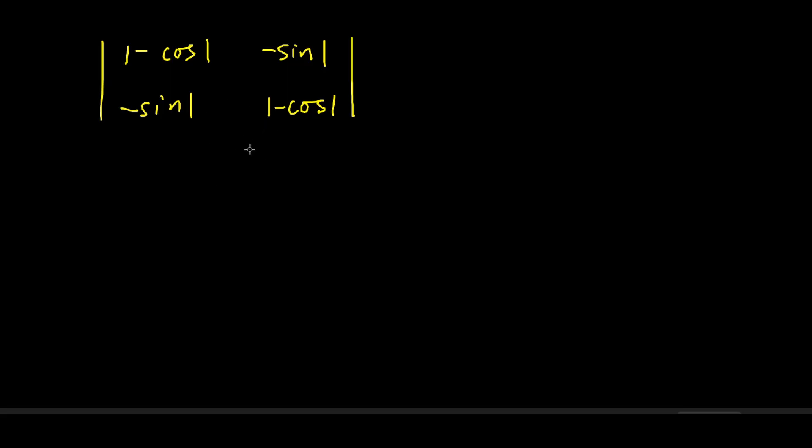This is a determinant. By expanding it, we get 1 minus cosine of 1 squared plus sine squared of 1. Expanding the first term, we get 1 minus 2 times cosine of 1 plus cosine squared of 1 plus sine squared of 1.